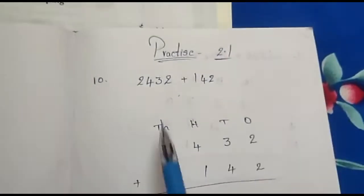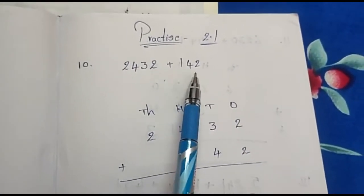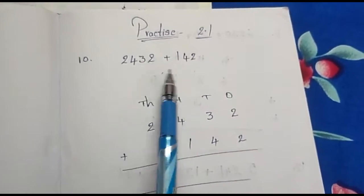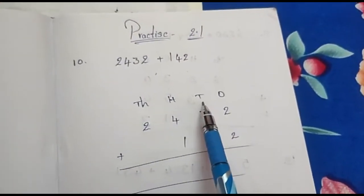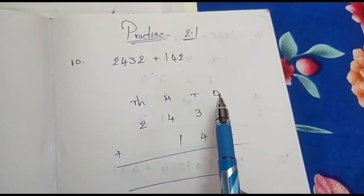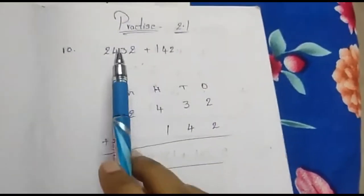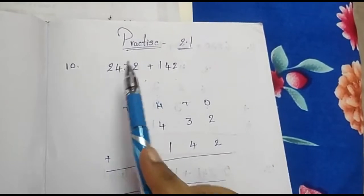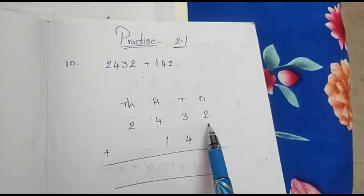Practice 2.1, 10th problem — we are solving here in the notebook. Now see here: 2,432 plus 142. These 2 we have to add. First, write them according to their place values — thousands place, hundreds place, tens place, and ones place. First number: 2,432 means 2 thousands, 4 hundreds, 3 tens, 2 ones.